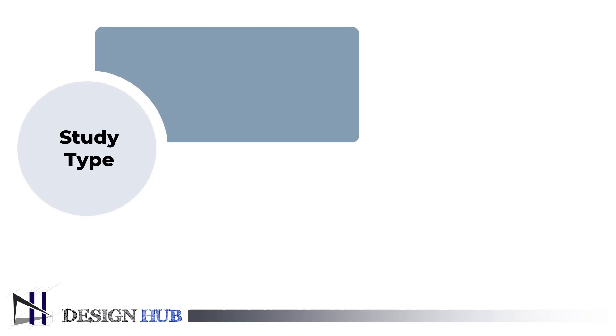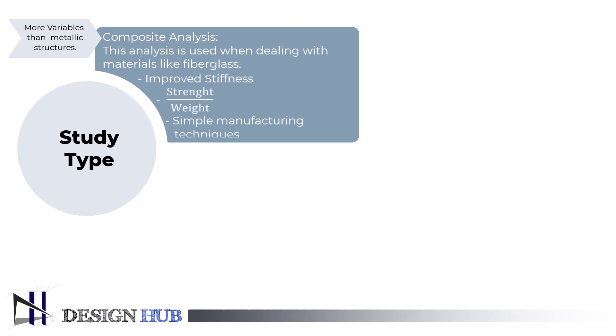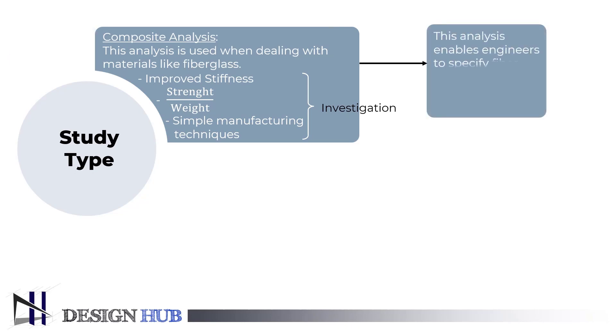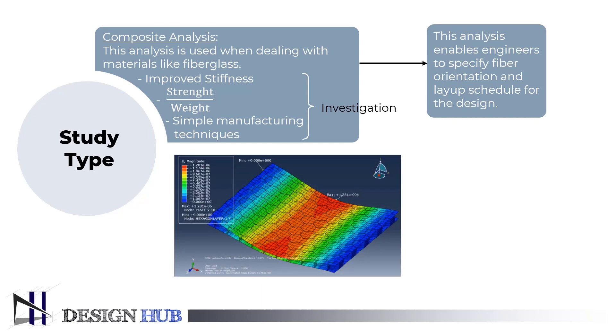The eleventh study type is composite analysis. Compared to traditional metallic structures, composite systems have a lot more variables. The composite analysis is used when dealing with materials like fiberglass or carbon fiber. By switching to composite structures, you can investigate improved stiffness and strength to weight ratios, simpler manufacturing techniques, and more creative design options. This study enables engineers to specify fiber orientation and layup schedule for their designs when designing with materials like fiberglass or carbon fiber. The findings offer details on interlaminar stresses, stresses at each layer, and findings specific to composites.